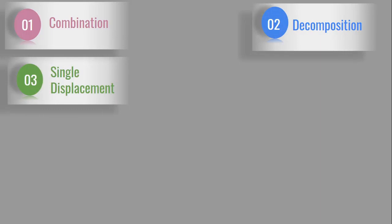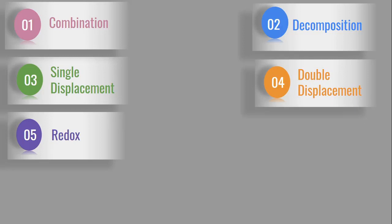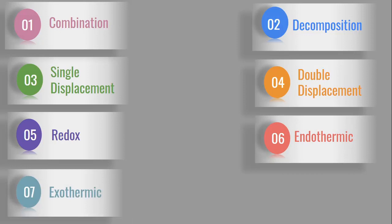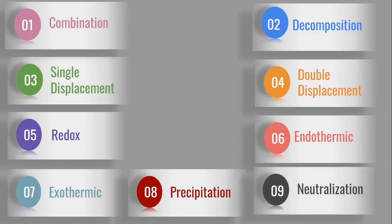First one is combination. Second one is decomposition. Third one is single displacement. Fourth one is double displacement. Fifth one is redox. Sixth one is endothermic. Seventh one is exothermic. Eighth is precipitation. Ninth one is neutralization.